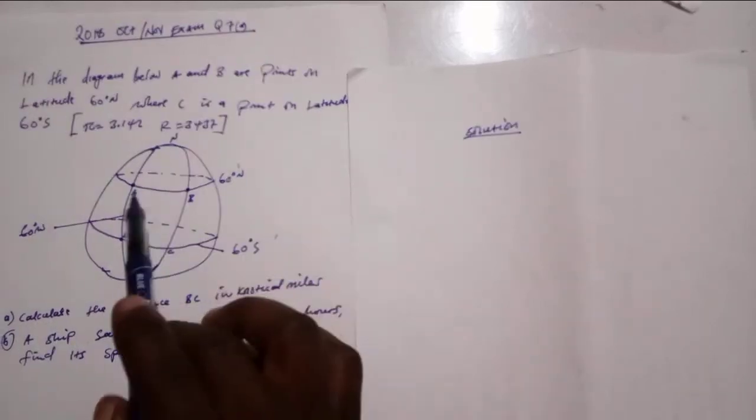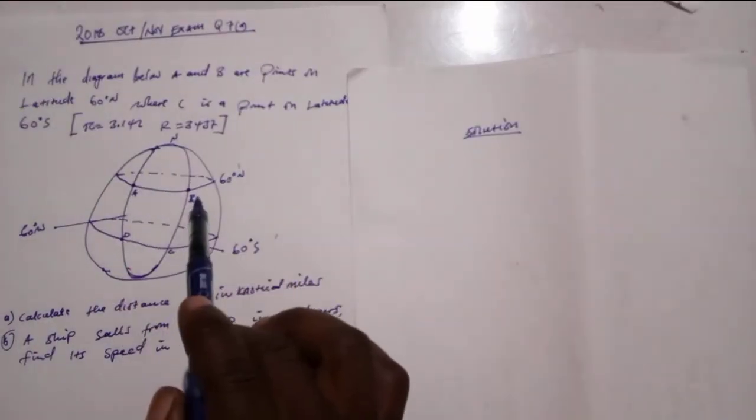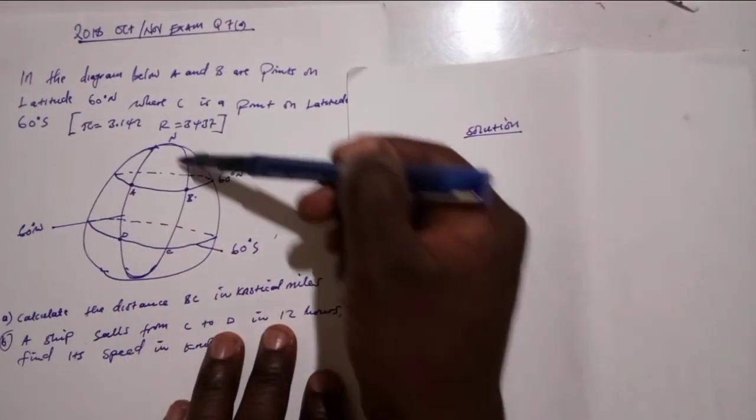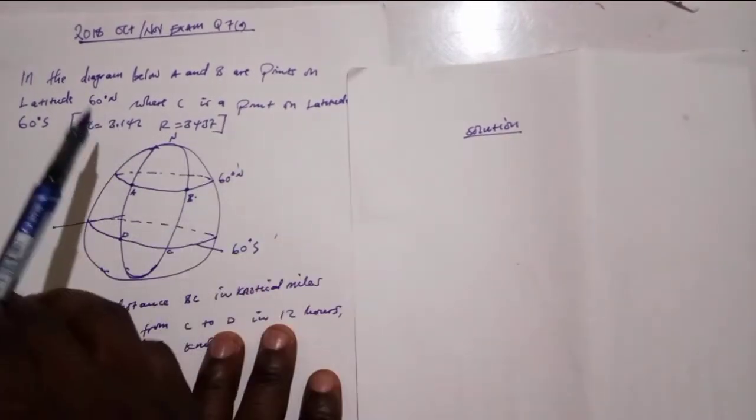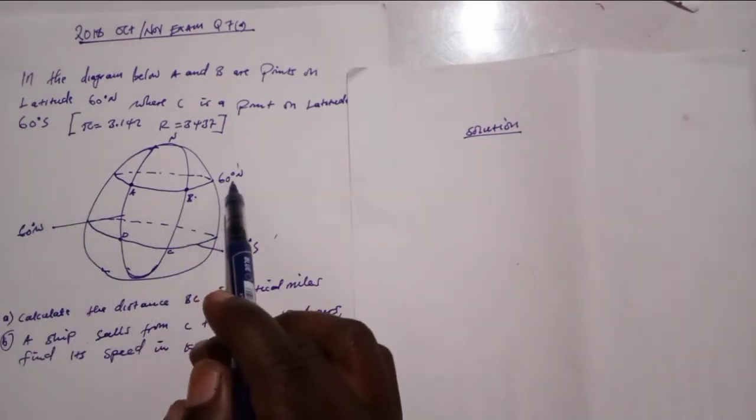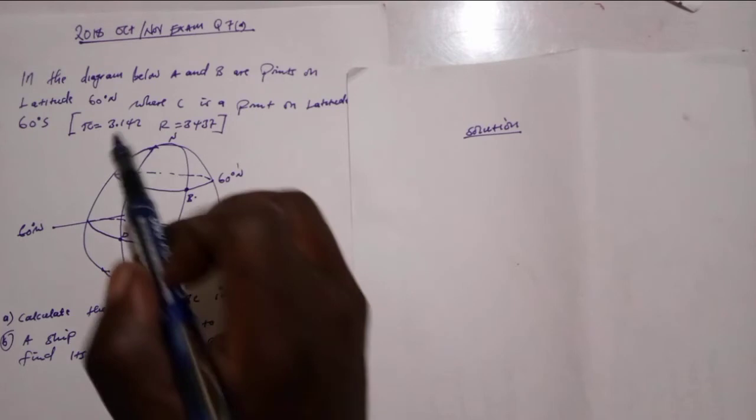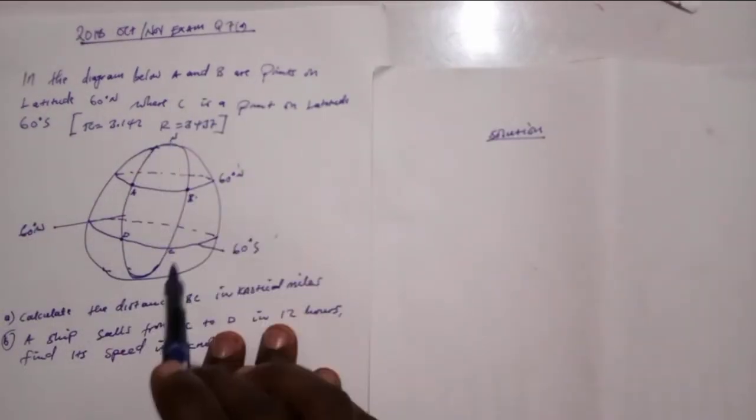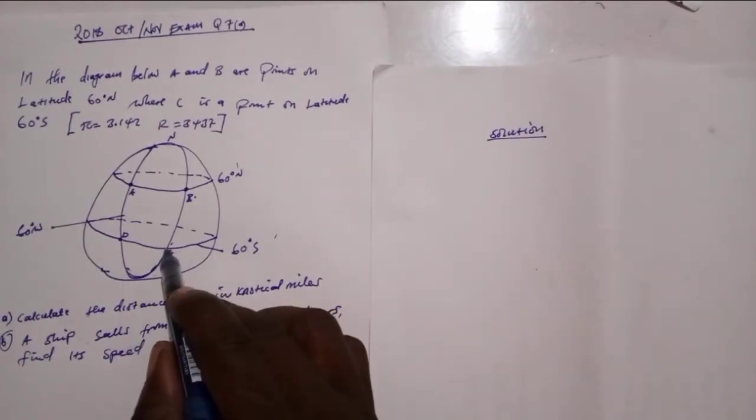In the diagram below, A and B are points on Earth. This is a latitude and this is a longitude. Latitude 60 north, where C is a point on latitude C, this is point C at that duty.